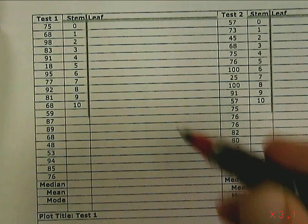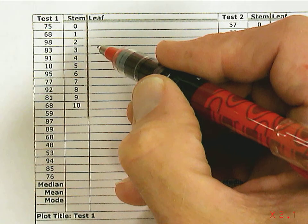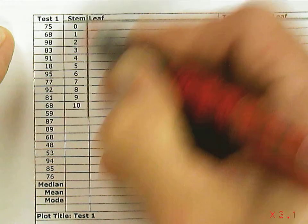We start by making what's called a stem and leaf plot. The purpose of a stem and leaf plot is to take these numbers out of this list and put them in order.